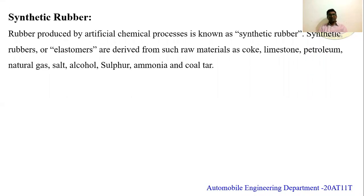Now moving to the next type: synthetic rubber. Synthetic rubber is an artificial rubber formed by a chemical process. The raw materials required for producing synthetic rubber differ from those of natural rubber.